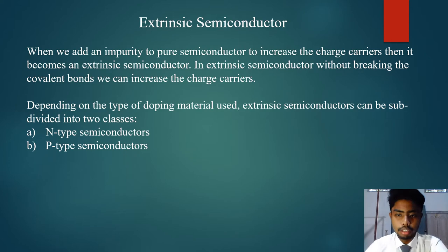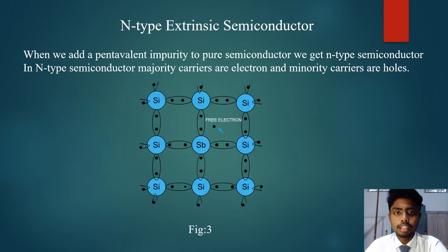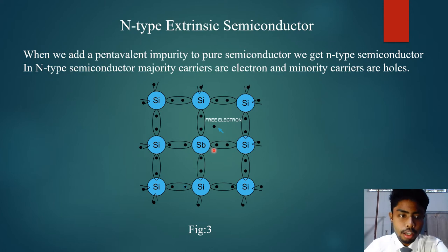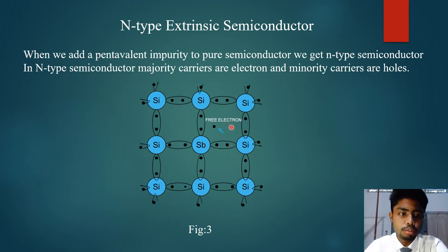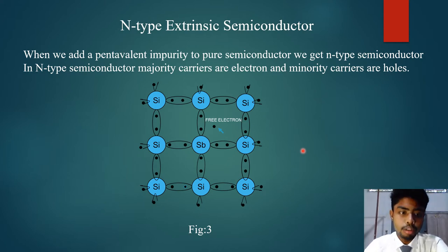N-type semiconductors are obtained when a pentavalent material like antimony is added to a pure silicon crystal. Each antimony atom forms covalent bonds with the surrounding four silicon atoms using four of its five electrons. The fifth electron is superfluous and loosely bound to the antimony atom, so it can be easily excited from the valence band to the conduction band by the application of an electric field or increase in thermal energy. In N-type semiconductors, electrons are the majority carriers while holes are the minority carriers, as shown in the diagram.